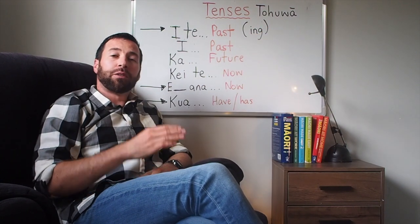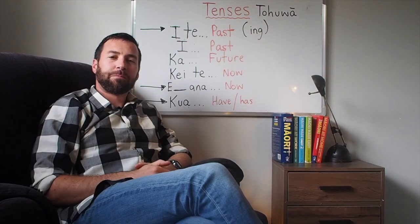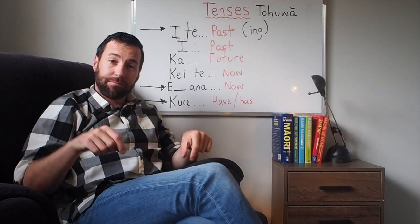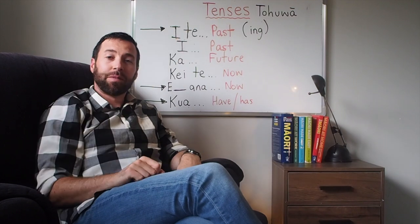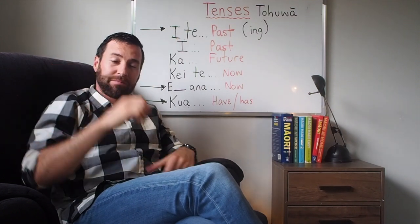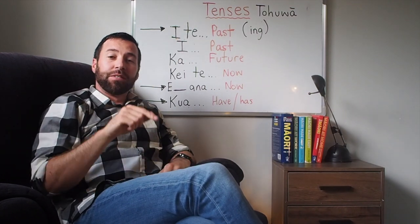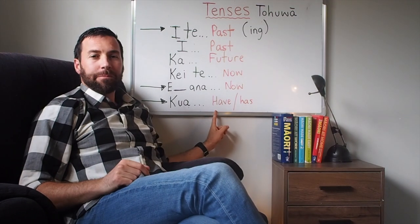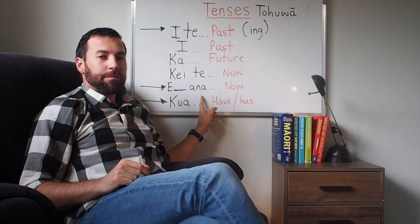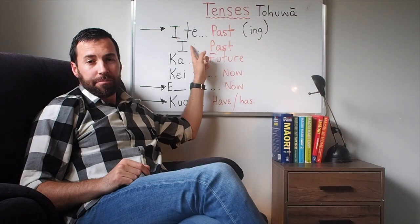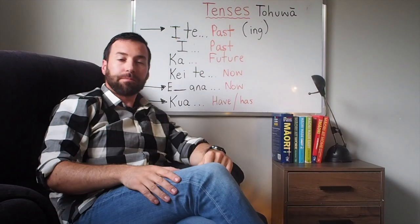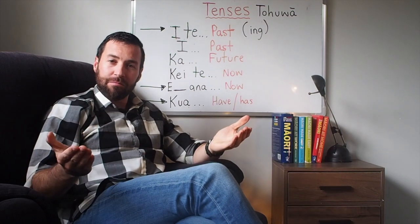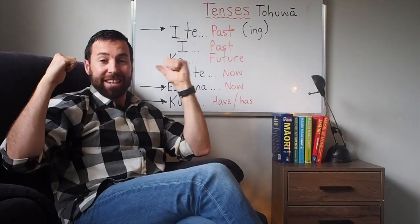Part 1 we covered the first 3 of 6. As a quick refresher, they were kaita, ka, i. In this clip, part 2, we're covering kua, e ana, and i te.